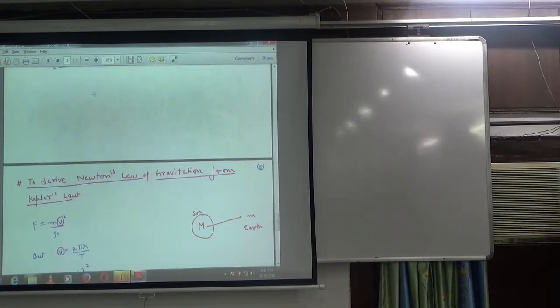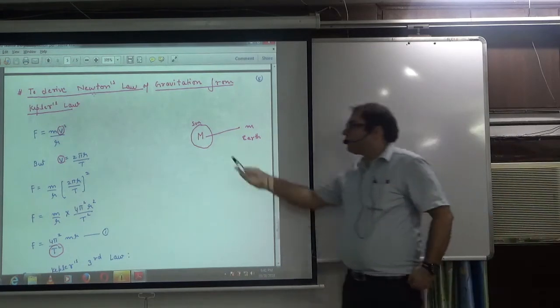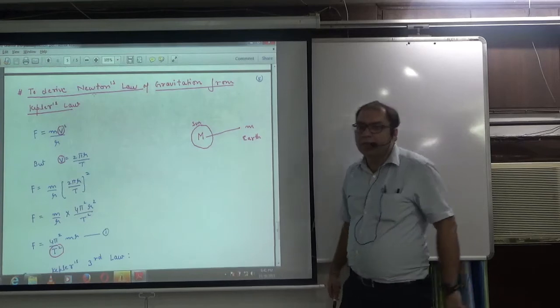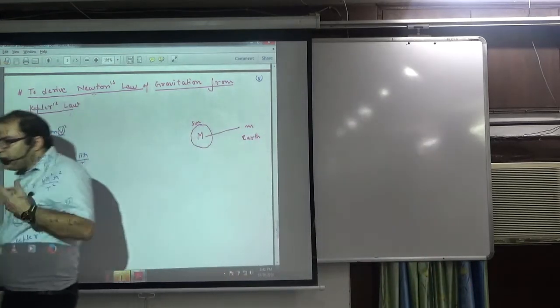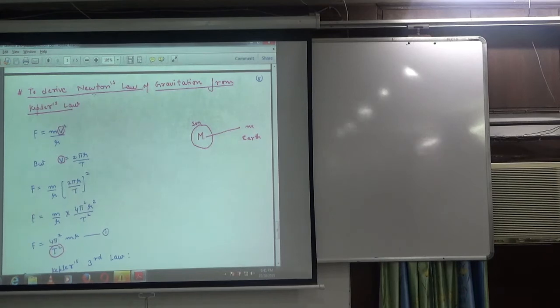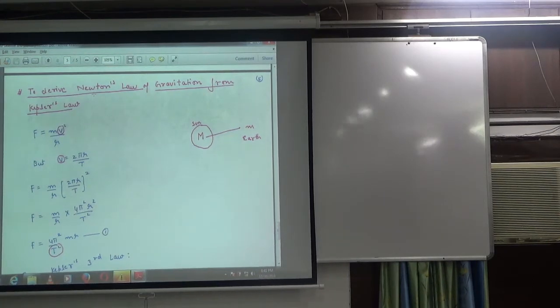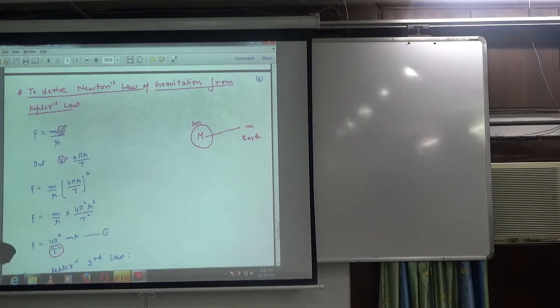To derive Newton's law from Kepler's law, we need to understand the Sun and Earth system. We can't write GMm/R² because we have to prove this. If the planet orbits the Sun, we know it needs centripetal force, which is mv²/R. We know gravity provides the force, but we have to prove it.